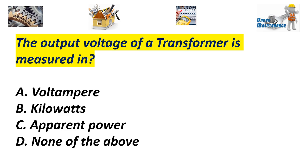The output voltage of a transformer is measured in A. Volt ampere. B. Kilowatts. C. Apparent power. D. None of the above. Answer Volt ampere.